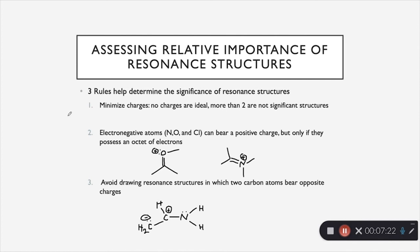You want to count the electrons around the electronegative atoms and confirm that, for example, an oxygen has two, four, six, eight electrons — and so it is able to have a positive charge. Our last rule says to avoid drawing resonance structures in which two carbons bear opposite charges. As shown in the molecule below, having two carbon atoms with opposite charges is very unfavorable — carbons don't really like having charges in general. To clarify: any resonance structure you draw that breaks one of these rules is still a valid resonance structure; it's just not the most important resonance structure of that molecule.